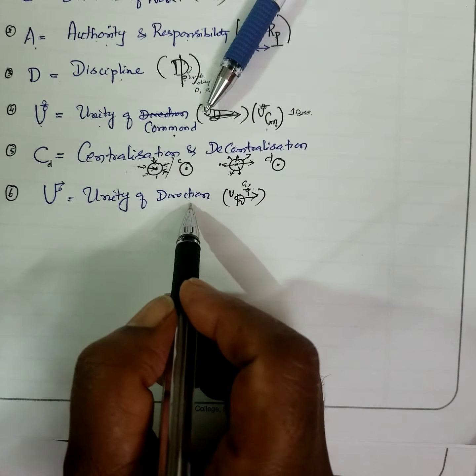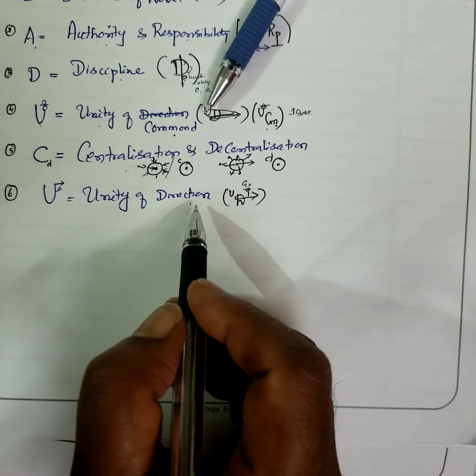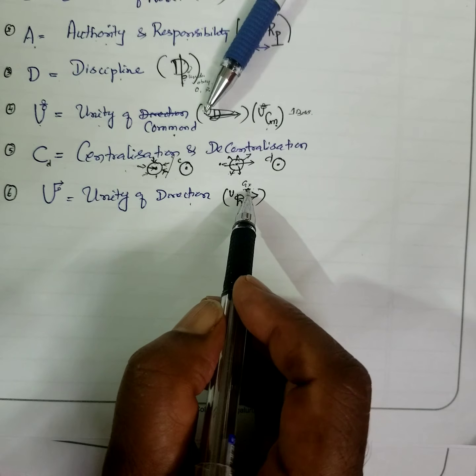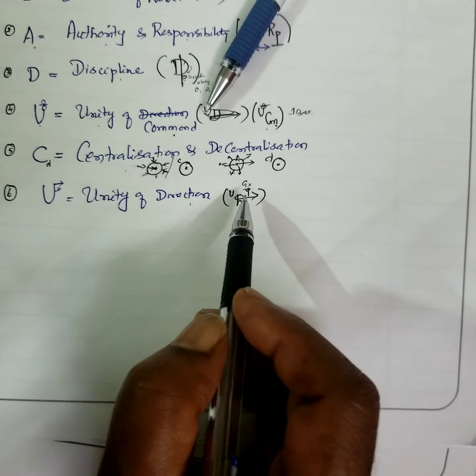U stands for unity of direction. That means each group should be led by one leader. It ensures action and coordination.